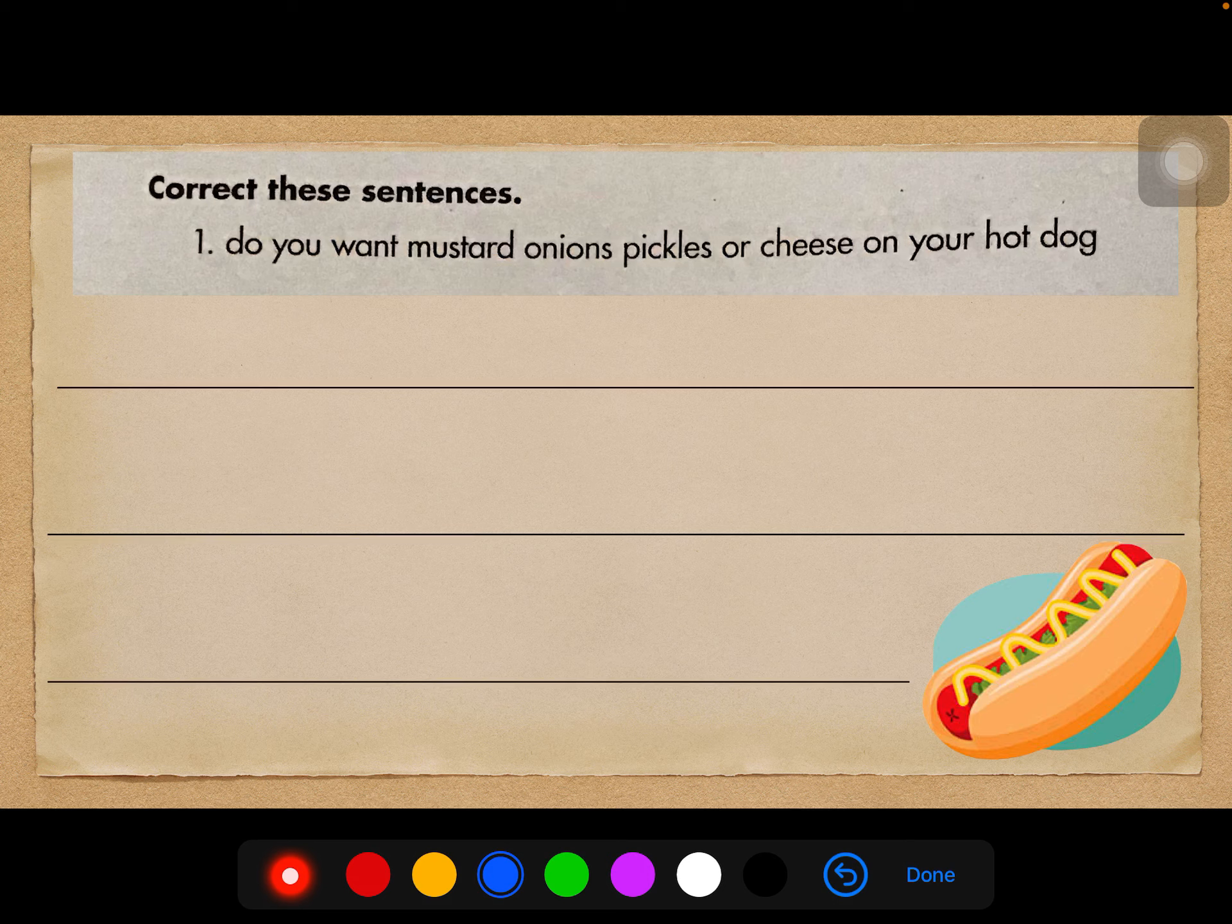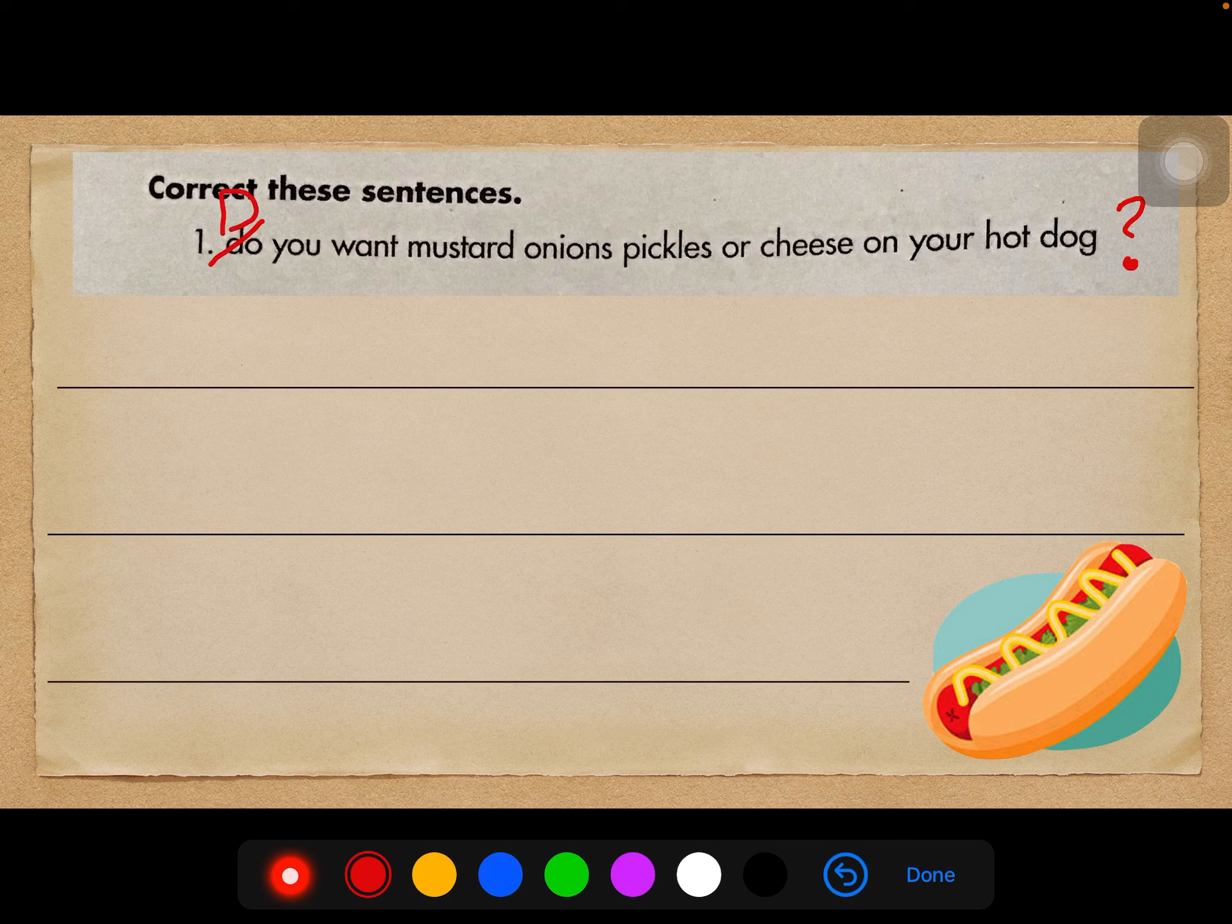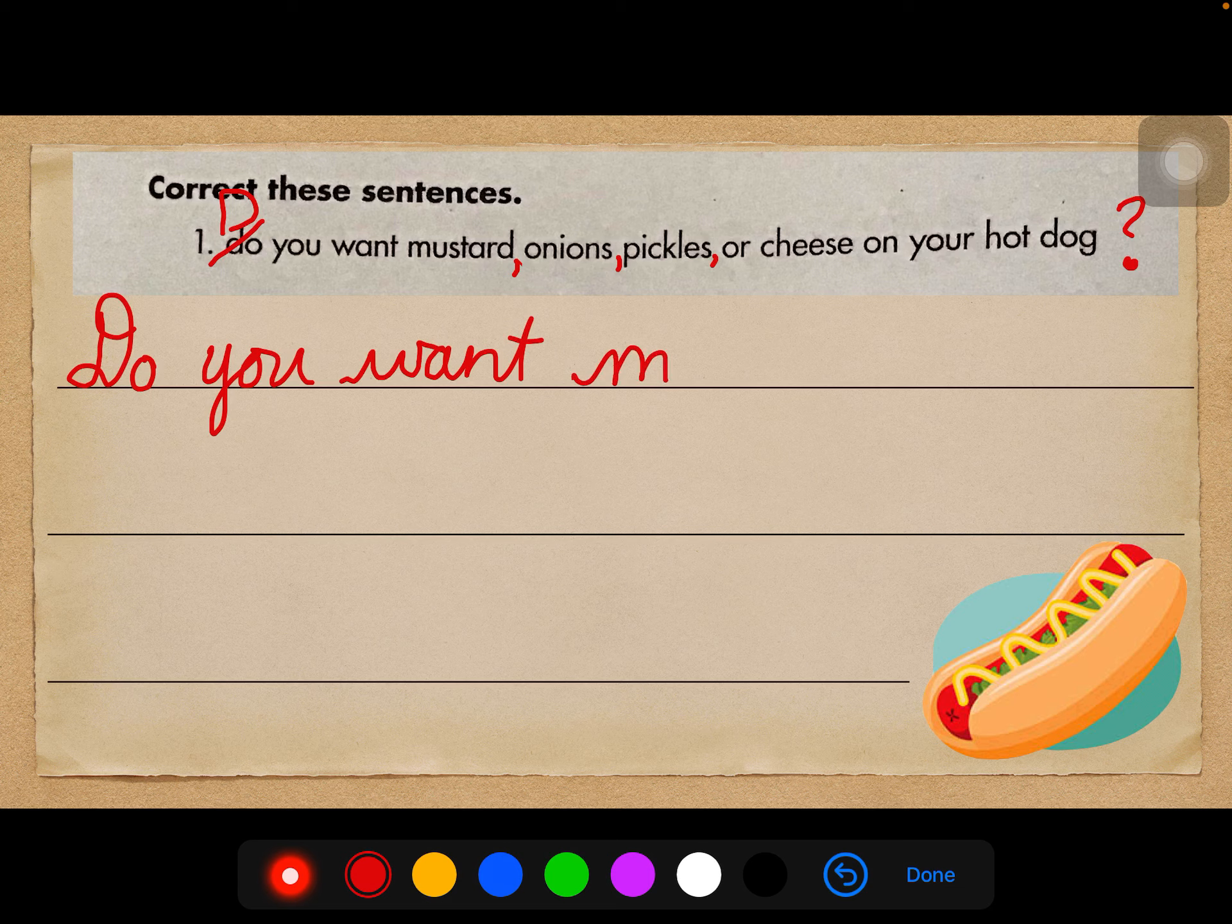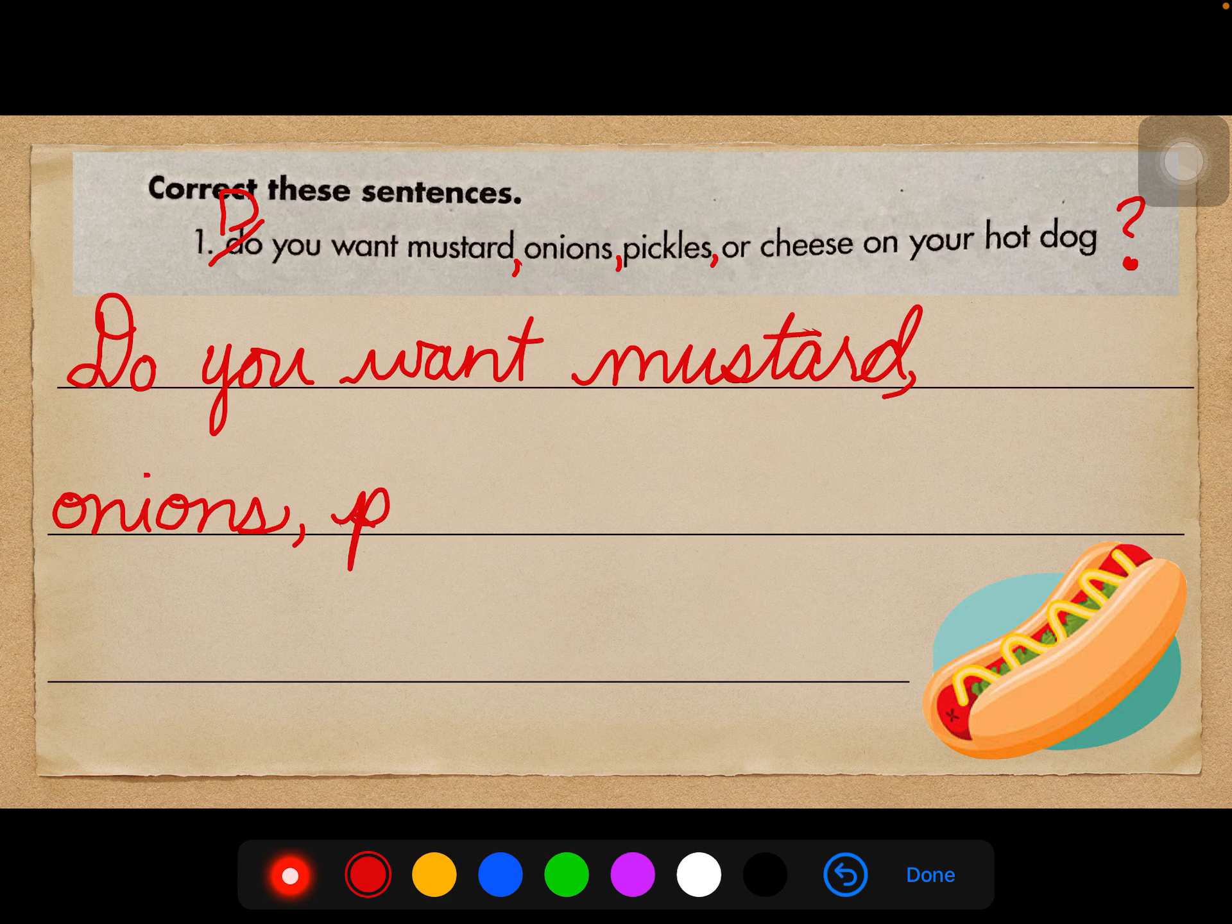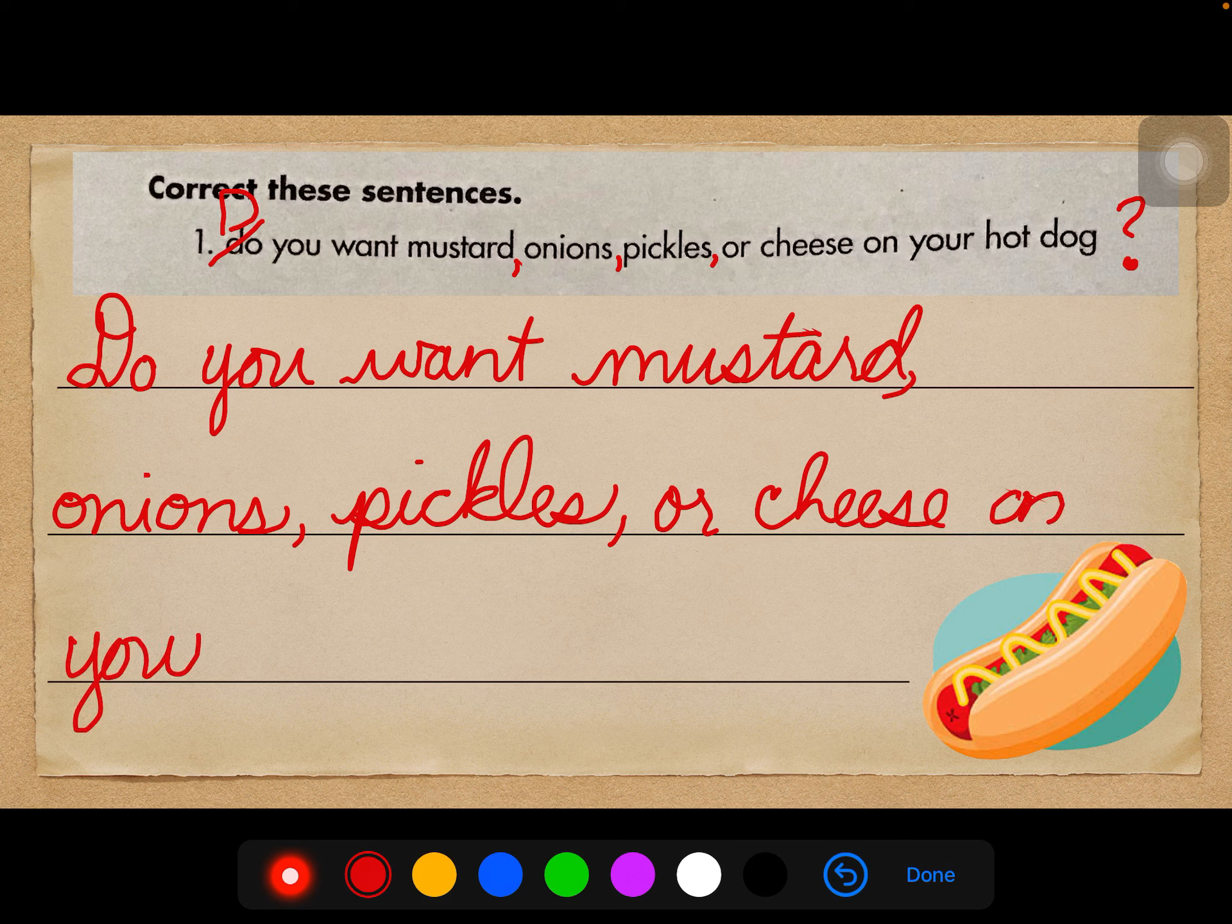Alright. Number 1 says, correct these sentences. Do you want mustard, onions, pickles, or cheese on your hot dog? Alright. So we don't have any indication that someone is saying something. This is just a regular old question. I'm going to go ahead and put the question mark at the end so I don't forget. We have to capitalize the beginning. Do you want mustard, onions, pickles, or cheese? This is a list, and I know that lists need to be separated by commas. And I think that's it. So now I'm going to rewrite. Alright. Do you want mustard, onions, pickles, or cheese on your hot dog?